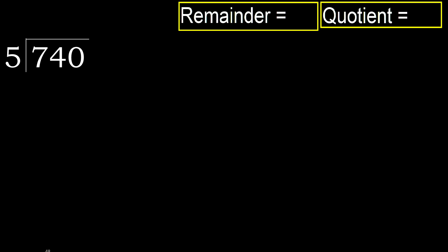740 divided by 5. 7 is not less — with 7, 5 multiplied by which number is nearest to 7 but not greater? 5 multiplied by 2 is 10, which is greater. 5 multiplied by 1 is 5, it is not greater. Subtract: 7 minus 5 is 2. Next.